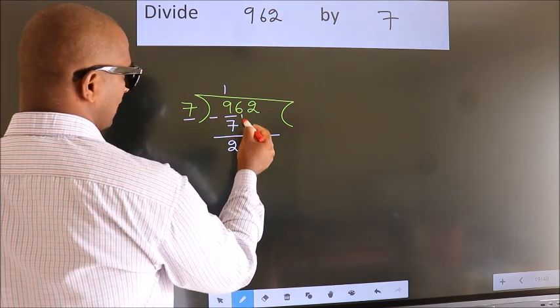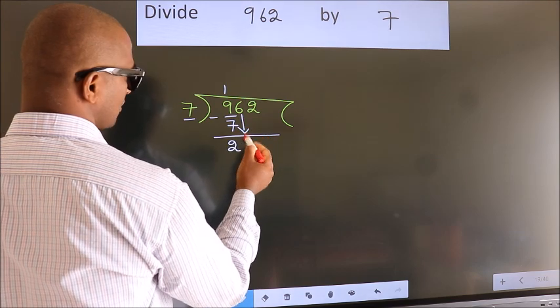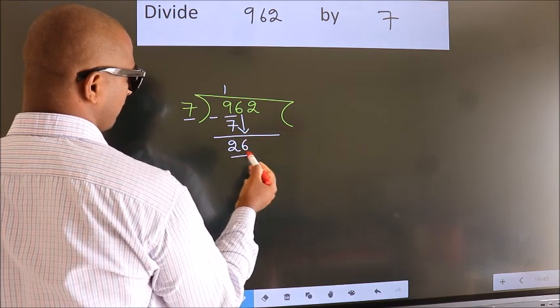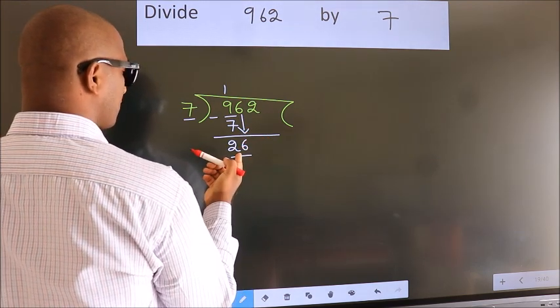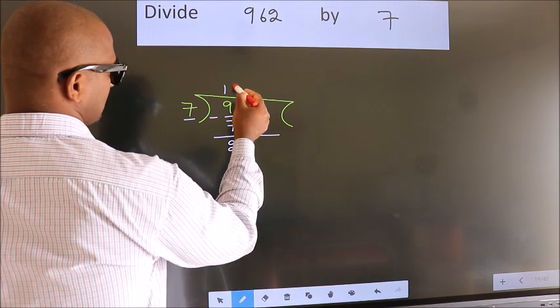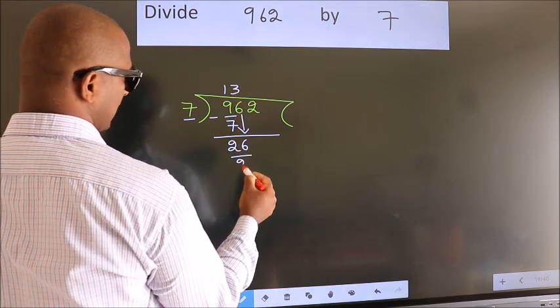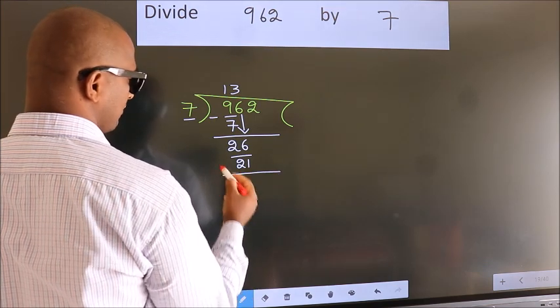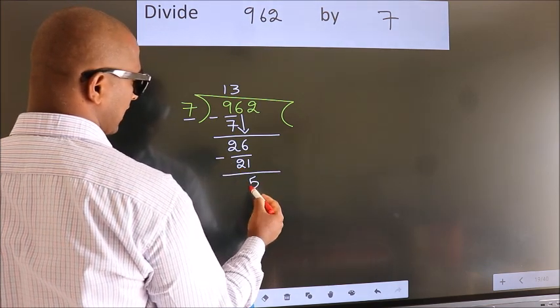After this, bring down the beside number. So, 6 down, giving us 26. A number close to 26 in the 7 table is 7 threes, 21. Now, we subtract. We get 5.